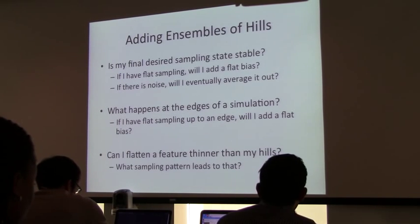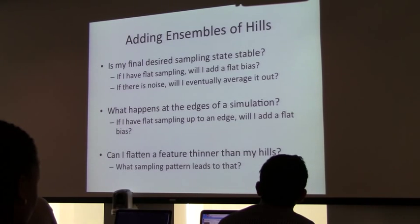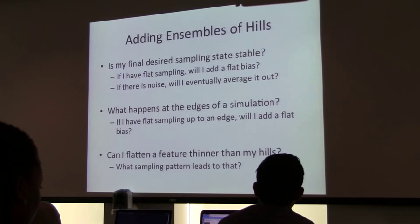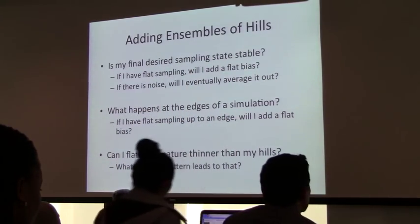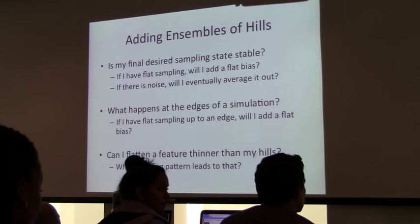Now on adding ensembles of hills. The questions I want to think about: the stability of the final state — if I have even sampling, will adding hills in that state produce even sampling again? How does that affect things? And what happens at the edges of a simulation? If you were looking at those earlier examples, the metadynamics error plots showed gray error bands widening towards the edges — more error at the edges — which deserves explanation. And finally: can I flatten a feature thinner than my hills?